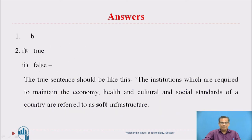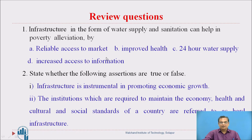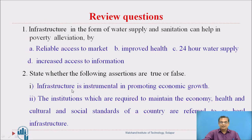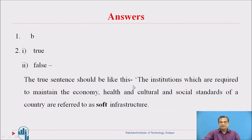Here are the answers. Question 1: Option B is correct — improved health. Water supply and sanitation help alleviate poverty through improved health of people. Question 2: The first assertion is true — infrastructure is instrumental in promoting economic growth. The second assertion is false — those institutions are referred to as soft infrastructure, not hard infrastructure.